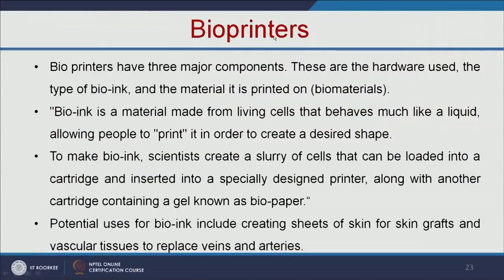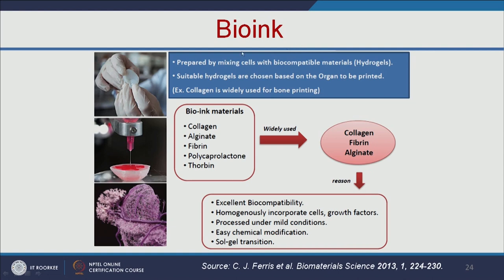Let us see bio-printers in detail. Bio-printers have three major components: the hardware used, the type of bio-ink, and the material it is printed on. The bio-ink is a material made from living cells that behaves much like a liquid, allowing people to print in order to create a desired shape. To make the bio-ink, researchers create a slurry of cells that can be loaded into a cartridge and inserted into a specially designed bio-printer, which then prints on a gel-like substance that is your bio-paper. The bio-ink is prepared by mixing cells with bio-compatible materials, for example hydrogels. Suitable hydrogels are selected based on the organ which you want to print, and some of the widely used bio-ink materials are collagen, alginate, and fibrin.